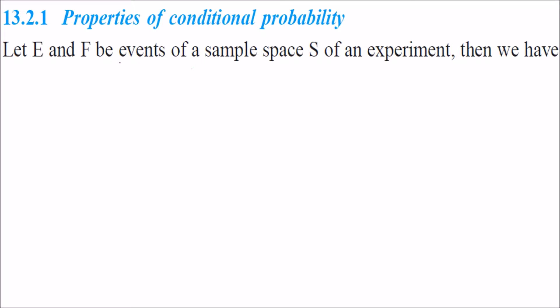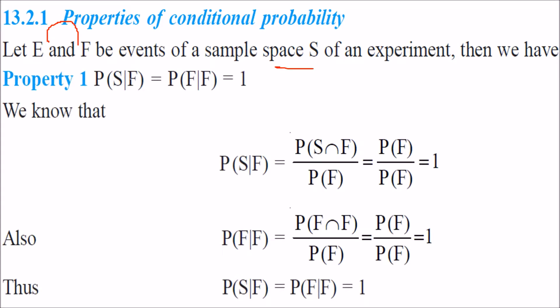Properties of conditional probability: if E and F are events of some sample space S, then Property 1 is P(S|F). This is sample space, this is F. P(S|F) is equal to P(F|F), which is equal to 1.